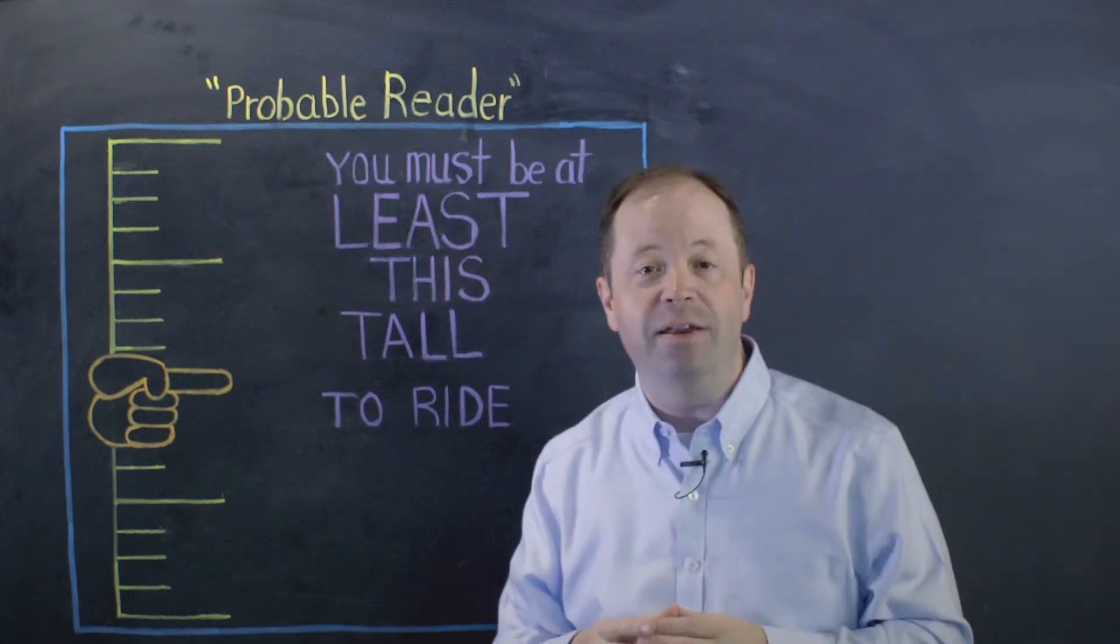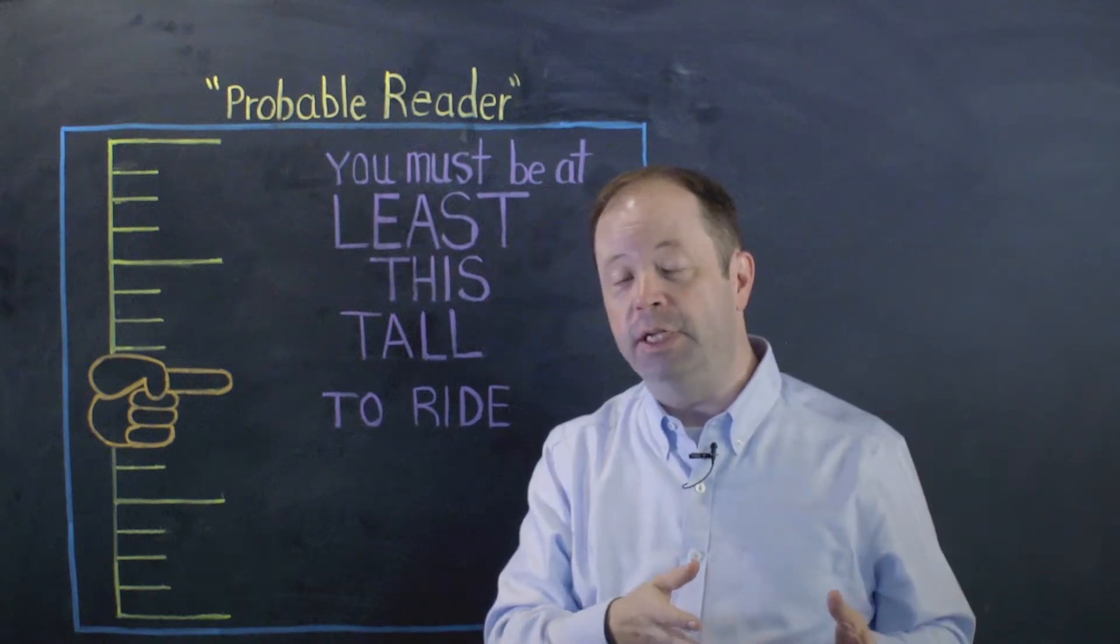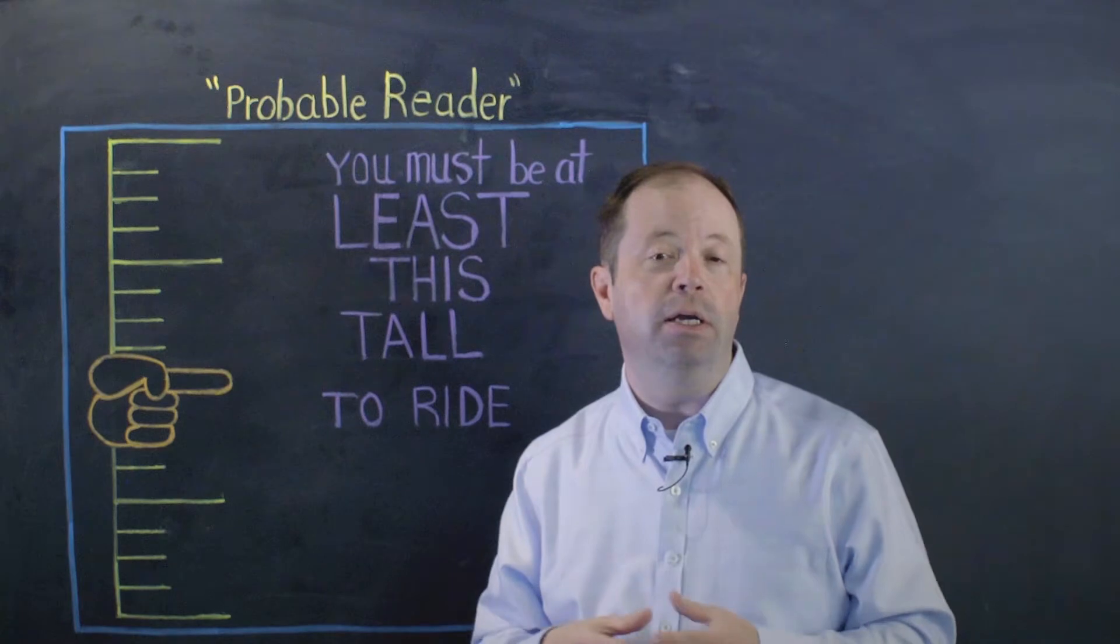So when you see that a student has made it to the Probable Reader category in STAR early literacy, they are now able to transition over and take both STAR reading and STAR math.